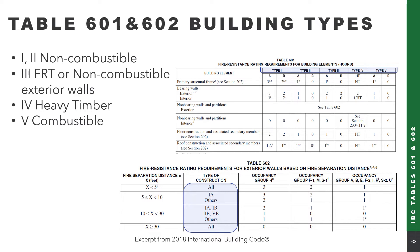Before we jump into Table 602, it's worth briefly mentioning building types, since that's going to be a critical part of the discussion. There are five different building types in the building code. Types 1 and 2 are considered non-combustible construction. Type 3 has non-combustible exterior walls or fire-retardant treated exterior walls with some additional fire rating requirements. Type 4 is heavy timber — large, thick wood members with additional fire endurance. Type 5 is combustible construction. These are critical factors in Table 601 and 602 of the IBC.